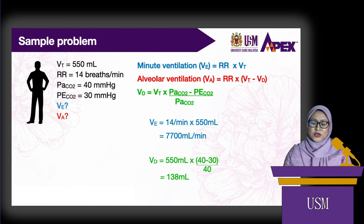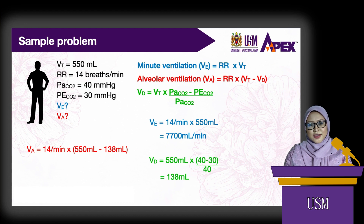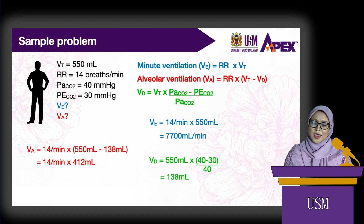Alveolar ventilation is 14 breaths per minute times (550 milliliters minus 138 milliliters), which is 14 per minute times 412 milliliters, giving an alveolar ventilation of 5,768 milliliters per minute.